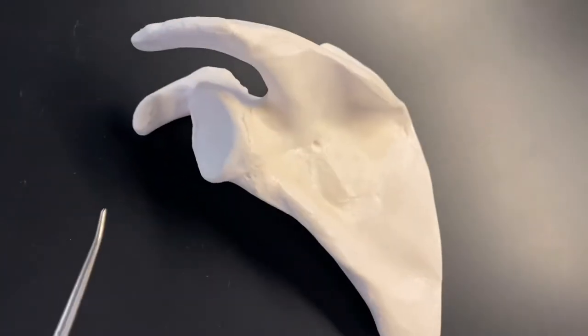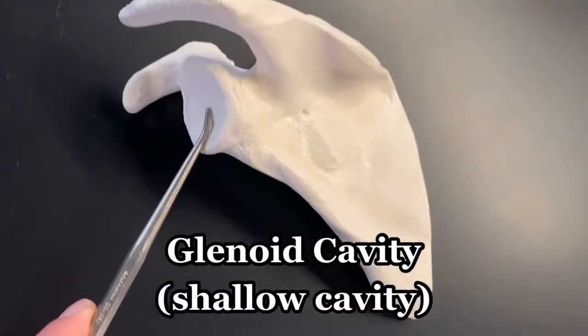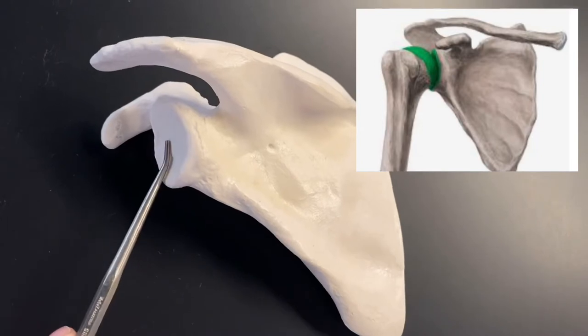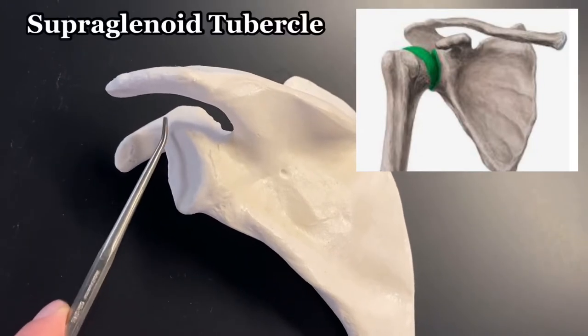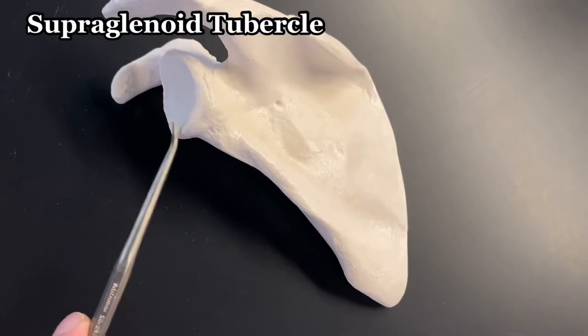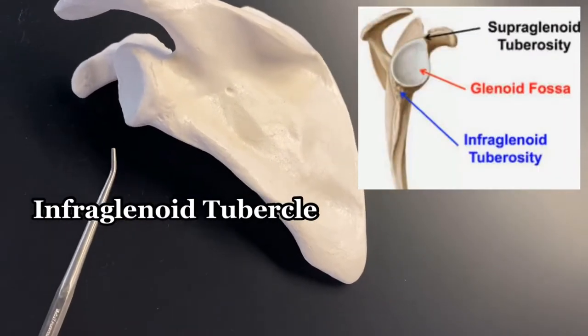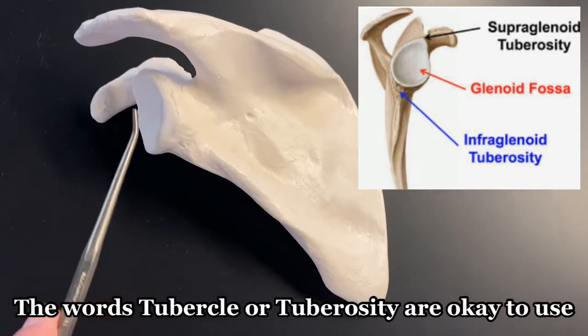Just inferior to that, we have the glenoid cavity. Glenoid cavity is where the humerus would attach. With the supraglenoid tubercle and the infraglenoid tubercle being these top two bony parts. Or one on the top, one on the bottom.